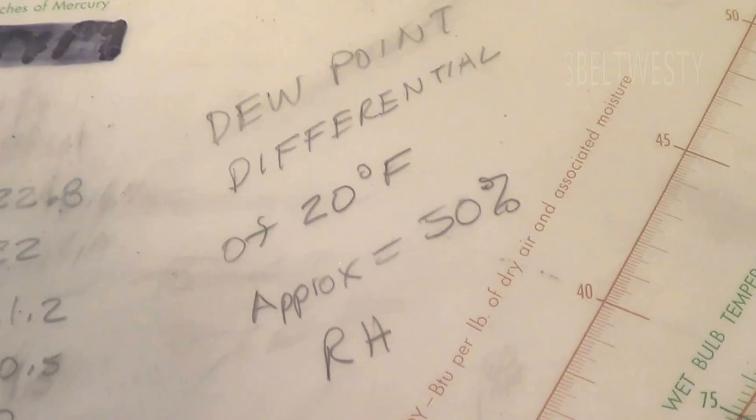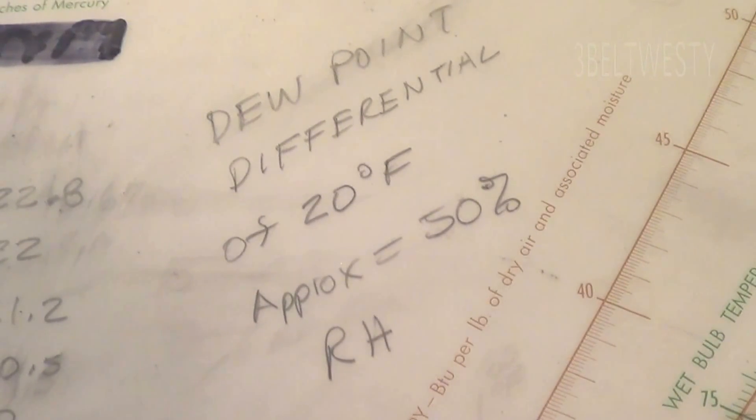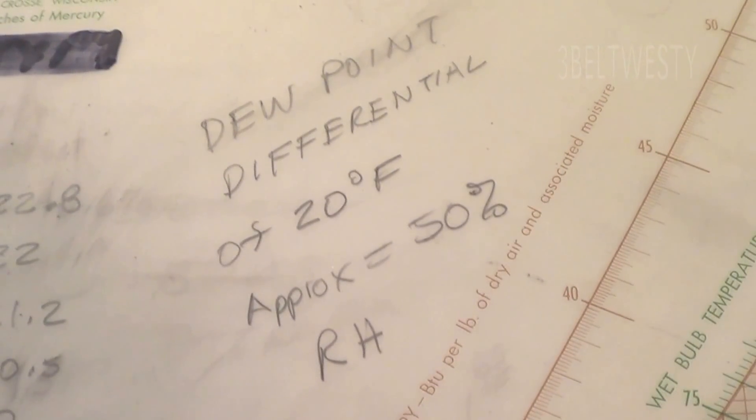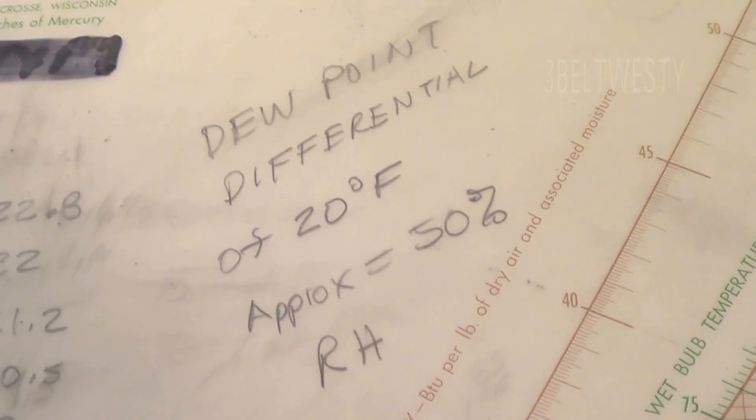Here's a psychometric chart lesson. A crude rule of thumb is a dew point differential of 20 degrees F. It's approximately 50% RH.